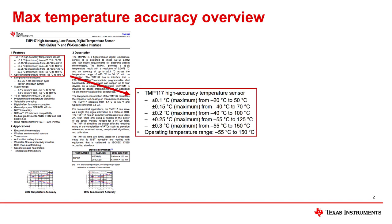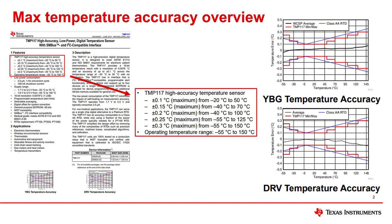Zooming in, we can see that the temperature accuracies listed are designated as maximum accuracies. This means that for a given temperature range, the corresponding temperature accuracy is the absolute worst case error that a sensor should have. This list is plotted in two graphs also shown on the first page of the data sheet for two different package types. The maximum and minimum temperature accuracies of the TMP117 sensor are represented by the stepped red line.